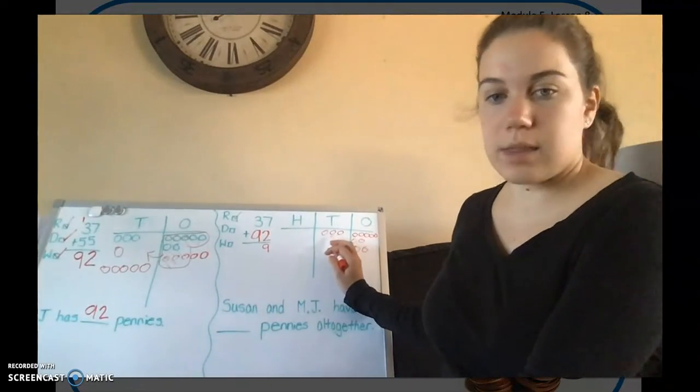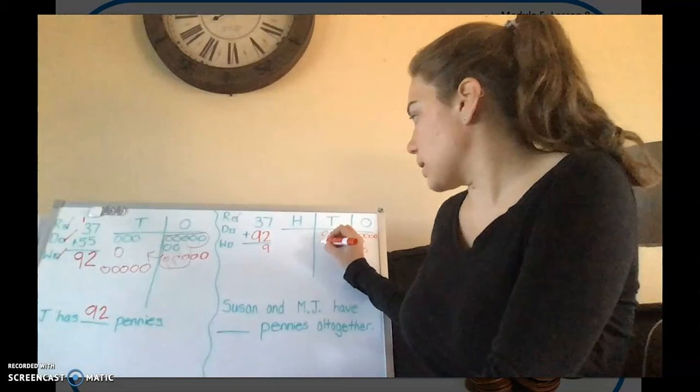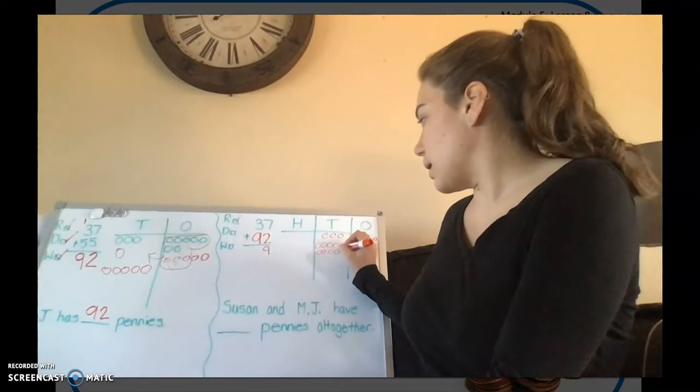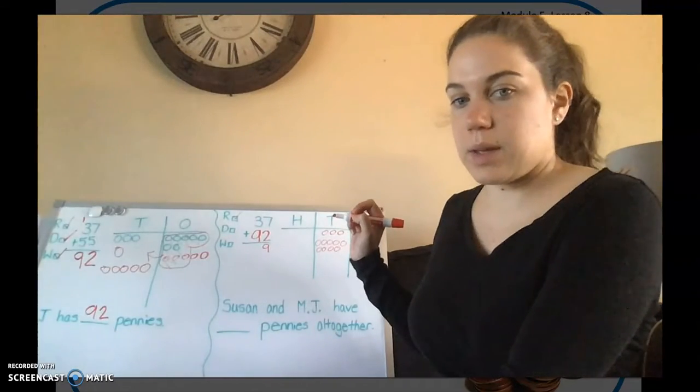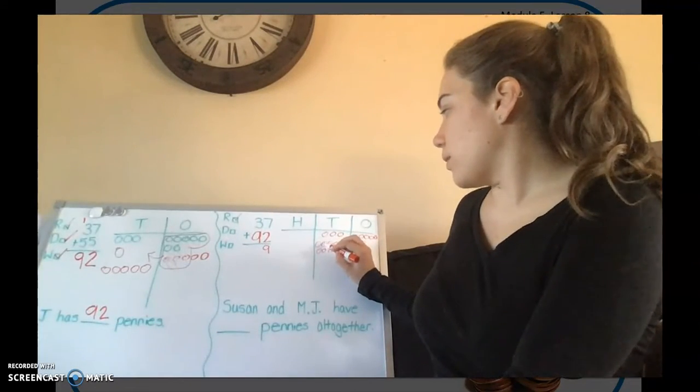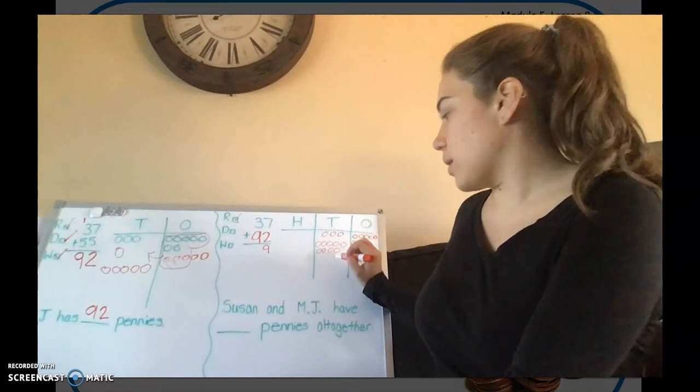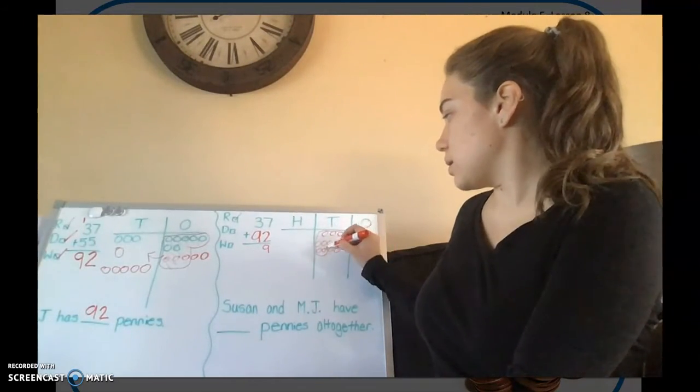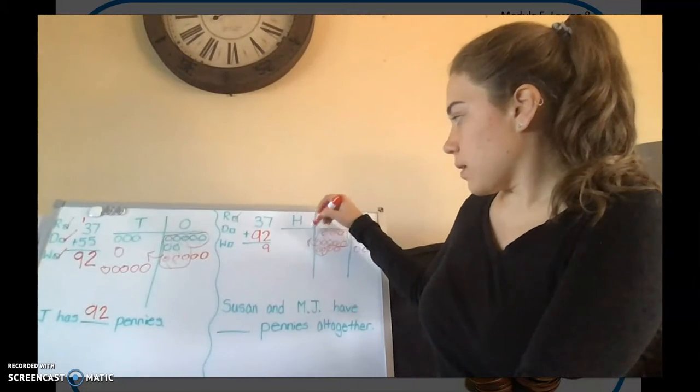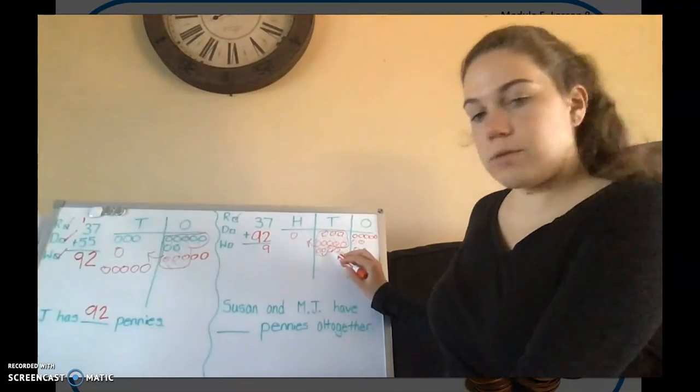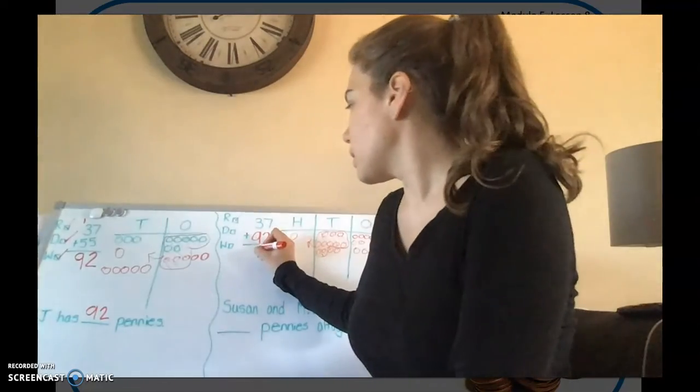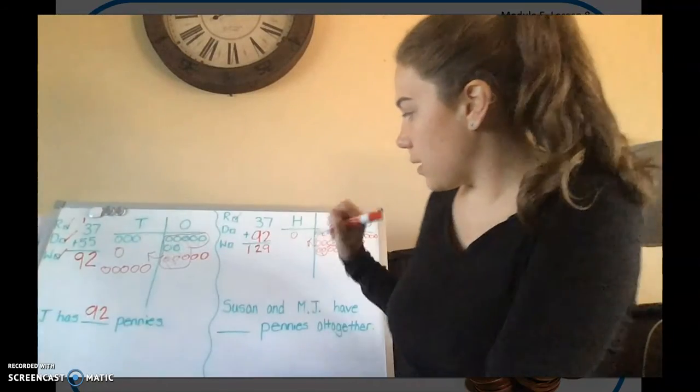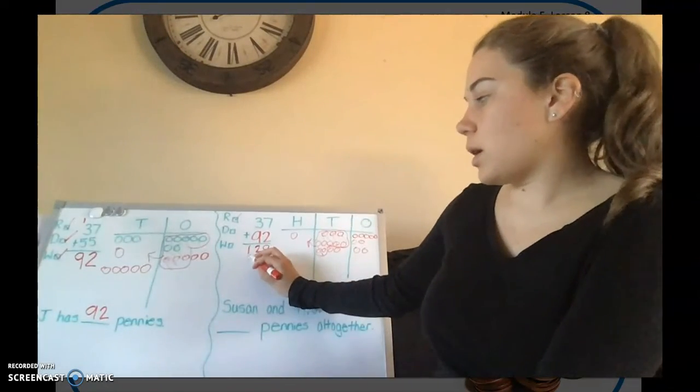Now we have 3 plus 9. So the 3's already there. Let's add our 9 more tens: 1, 2, 3, 4, 5, 6, 7, 8, 9. So let's count how many tens we have now: 1, 2, 3, 4, 5, 6, 7, 8, 9, 10, 11, 12. Too many. So we're going to trade in 10 tens for 1 hundred. So we only have 2 tens left. And we traded in 1 hundred. There's nothing in the hundreds column yet, so we're just going to put it right here. So 129.